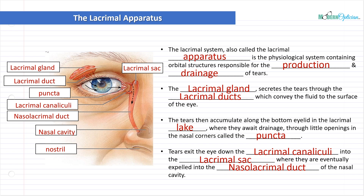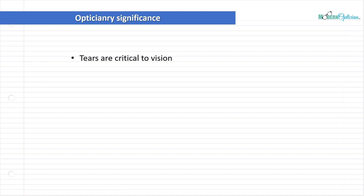Why is all of this important? Every time we talk about a different structure, we talk about why it's important to us as opticians. The first and most important reason is that tears are critical to vision. We talked about how the eye requires a smooth refractive surface of the cornea. The tears keep the cornea healthy, smooth, and transparent to allow it to refract light. The tears themselves also have a small refractive component as well - so tears keep the cornea healthy, which is the main refractive element, and also refract light themselves.